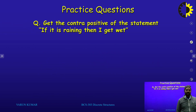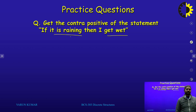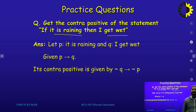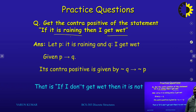Some practice questions: get the contrapositive of the statement 'if it is raining then I get wet.' We take P = it is raining, Q = I get wet. Given P tends to Q, the contrapositive is negation of Q tends to negation of P: 'if I do not get wet, then it is not raining.' Similarly you can solve other questions.